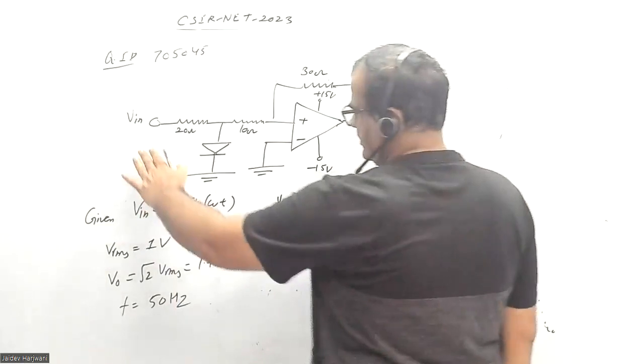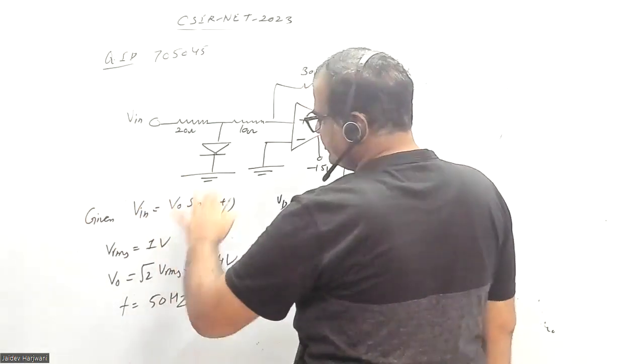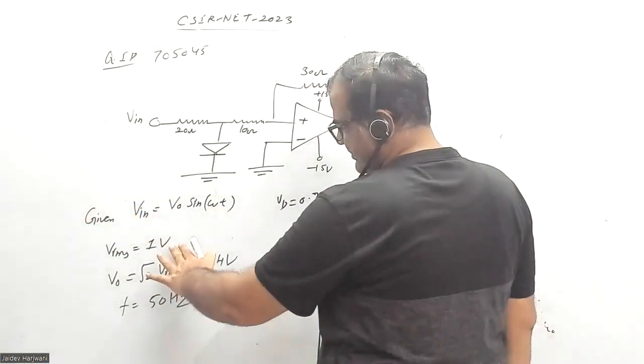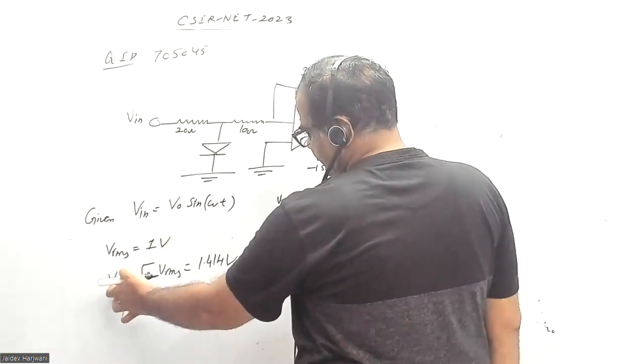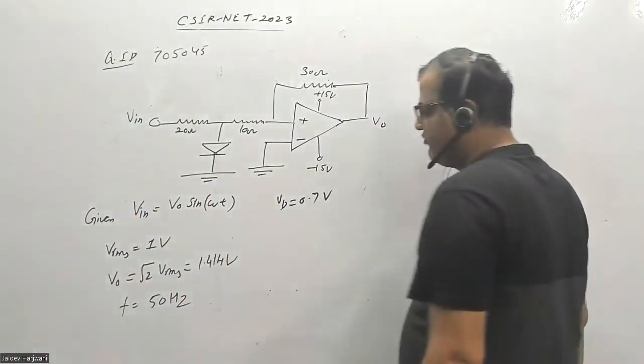The input is given as a sinusoidal wave whose RMS value is given as one volt. So I can find what is the peak value. The peak value will be 1.41 volt.